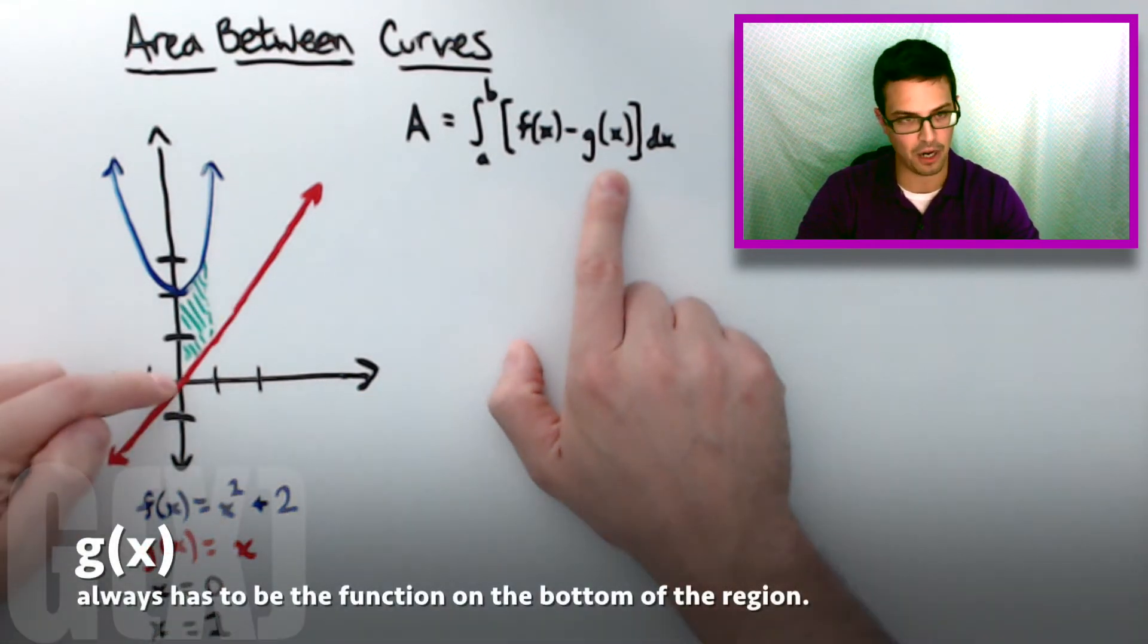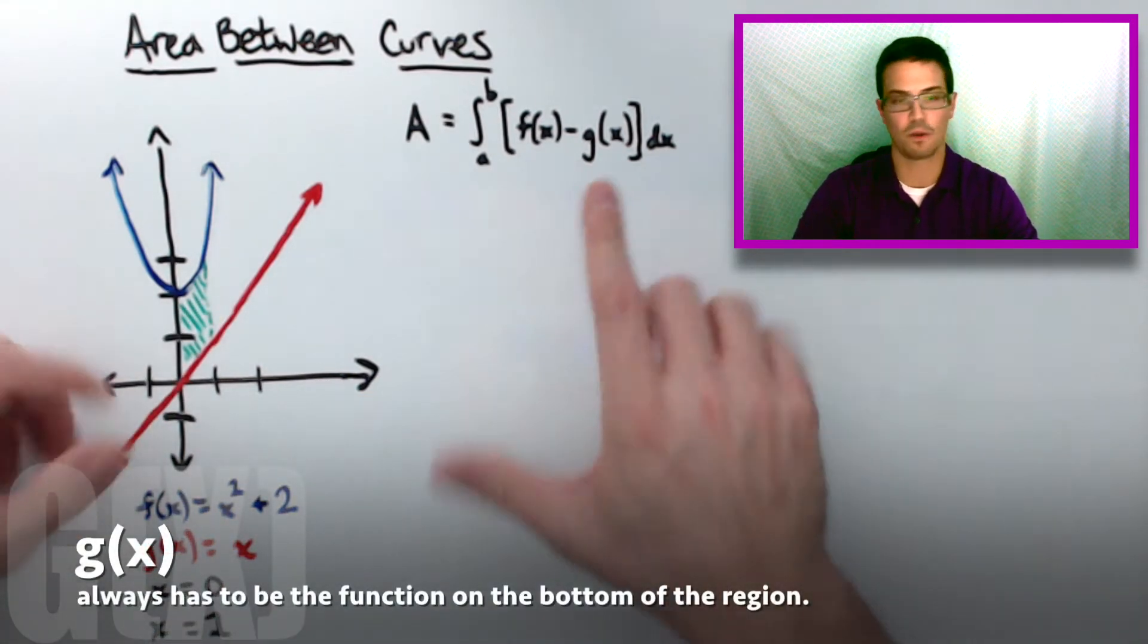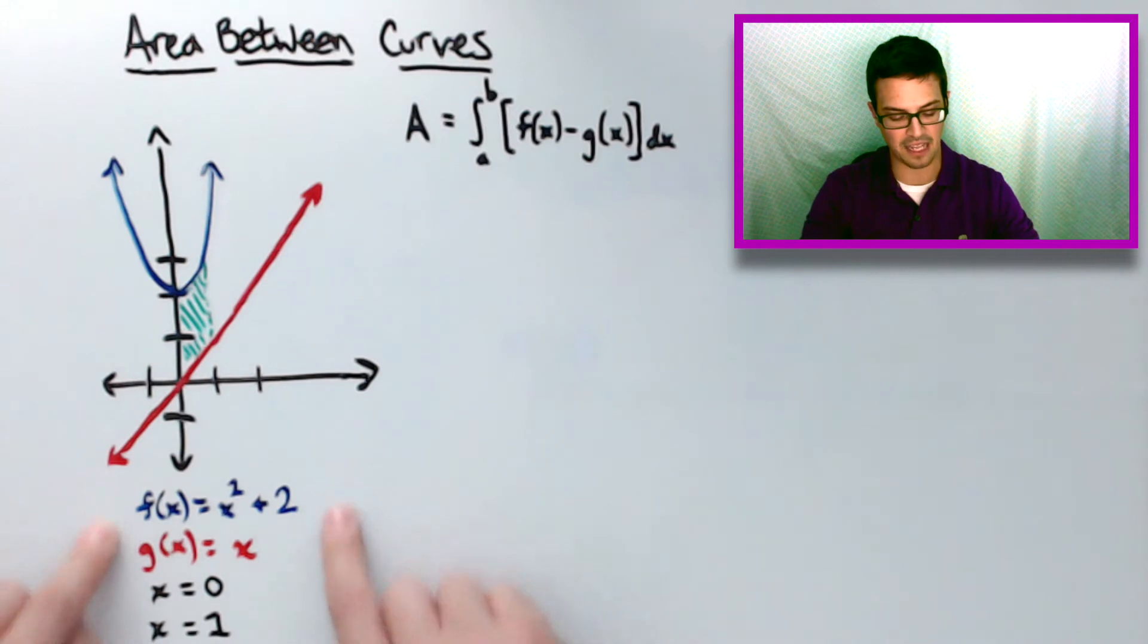The g of x is going to be that bottom part, and then you're going to subtract the two. So we're going to basically set this problem up based on our given down here.